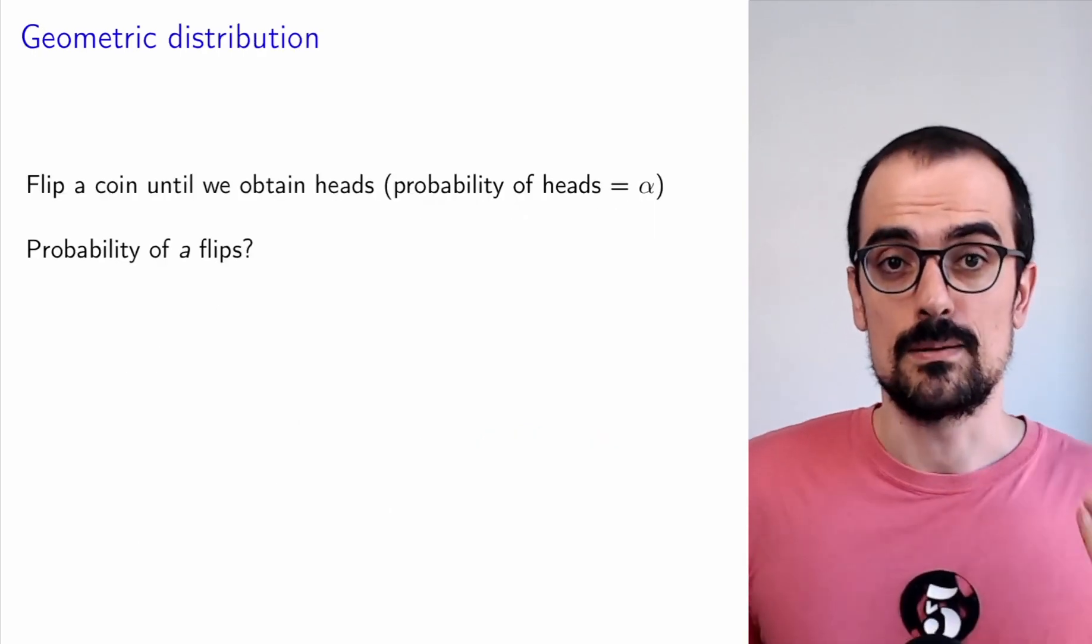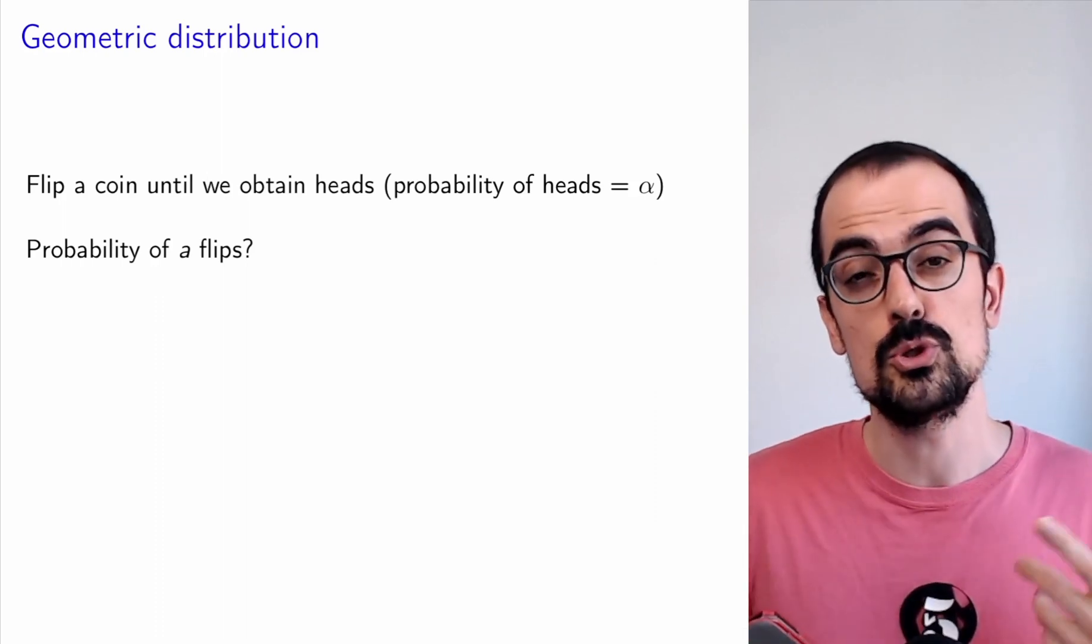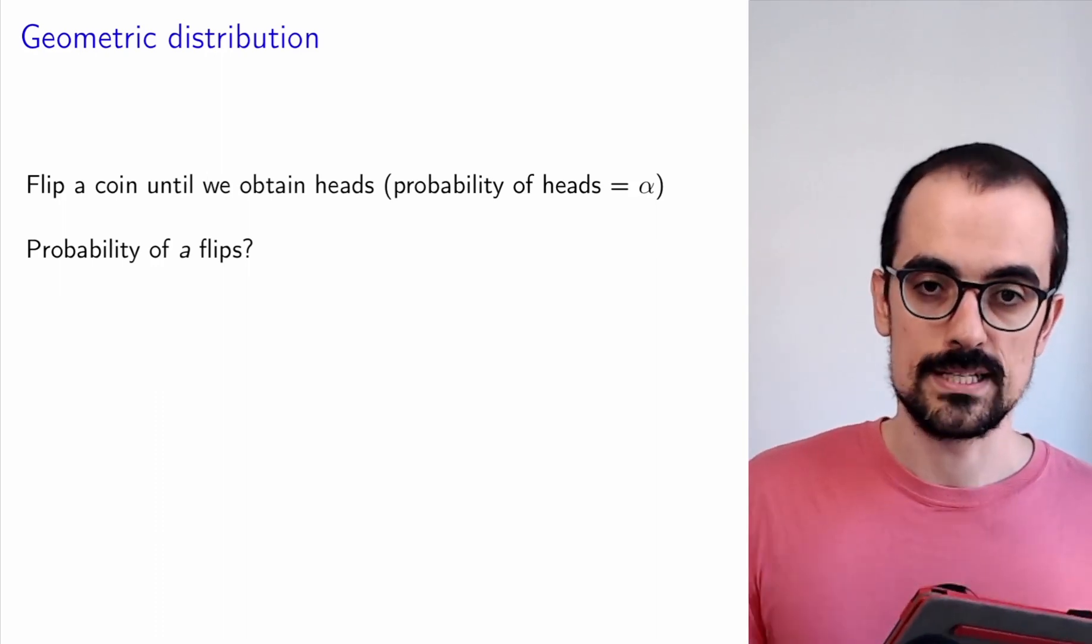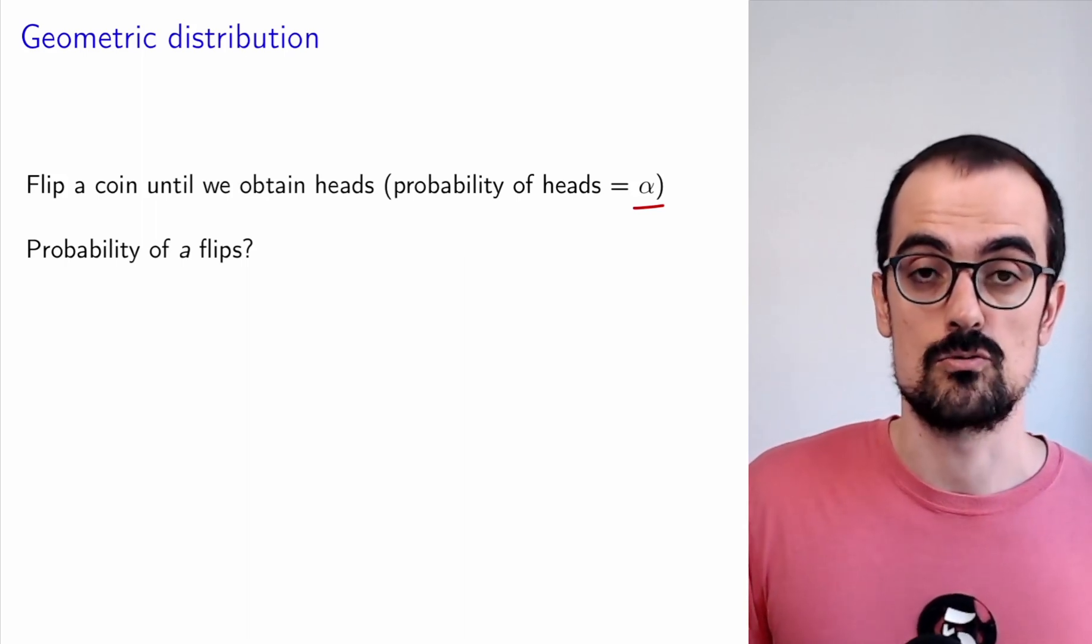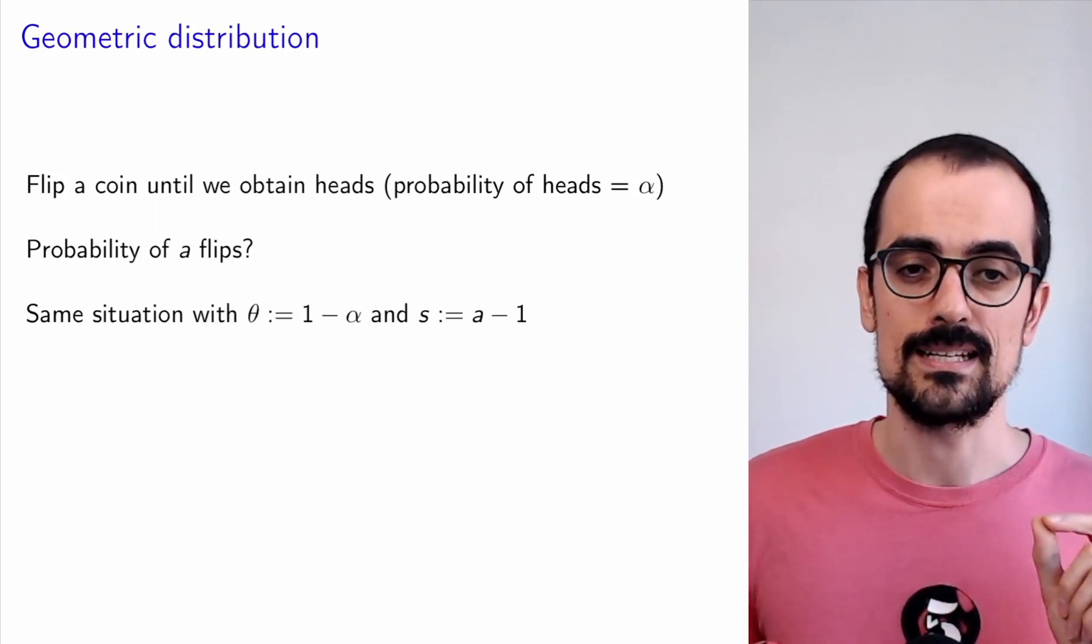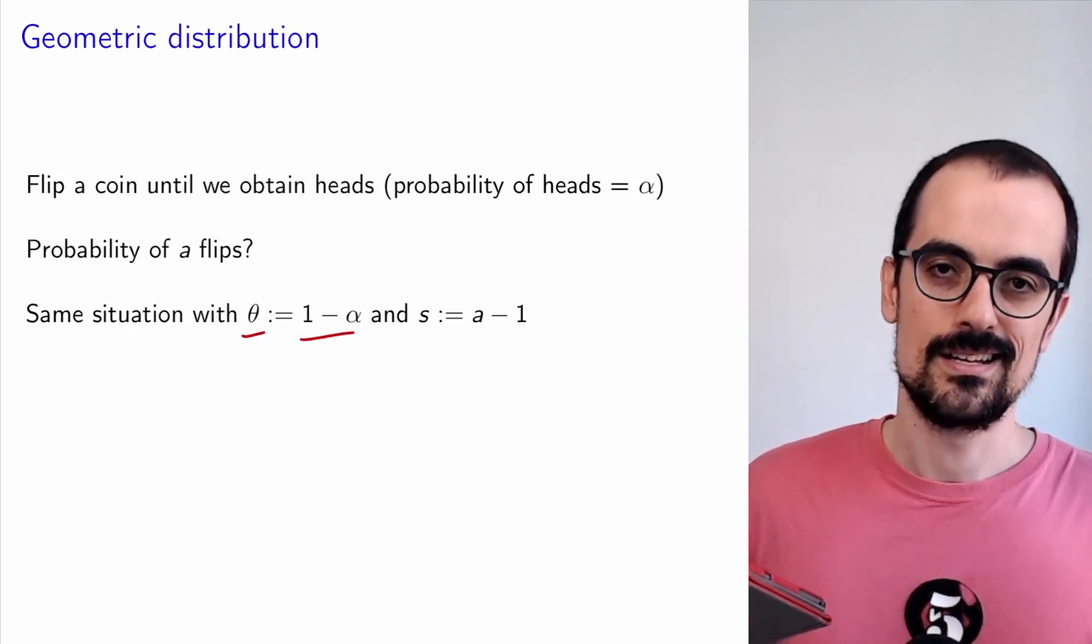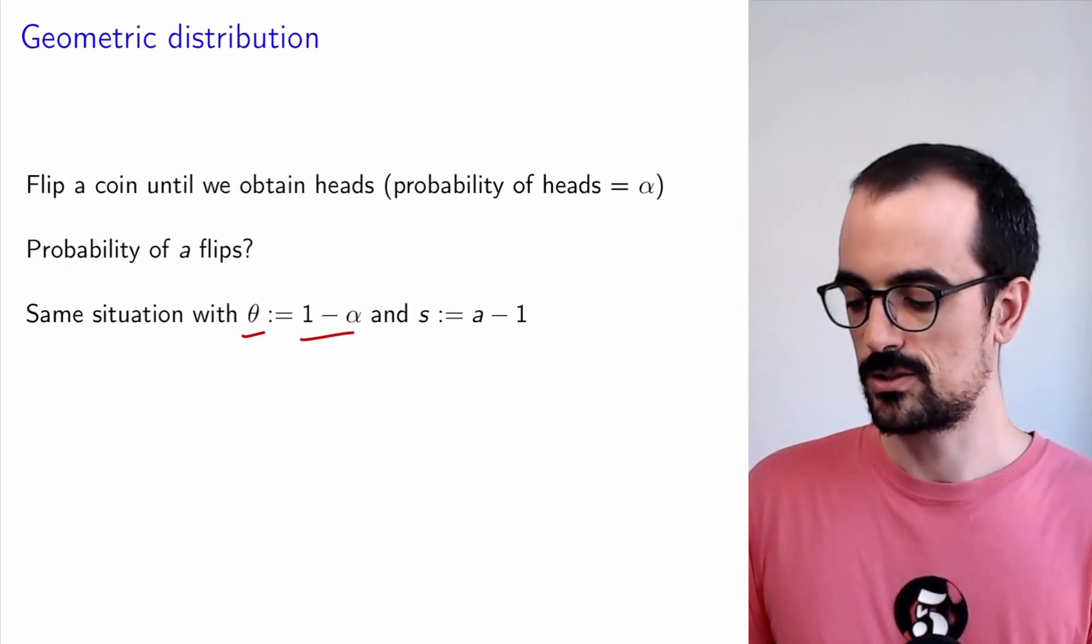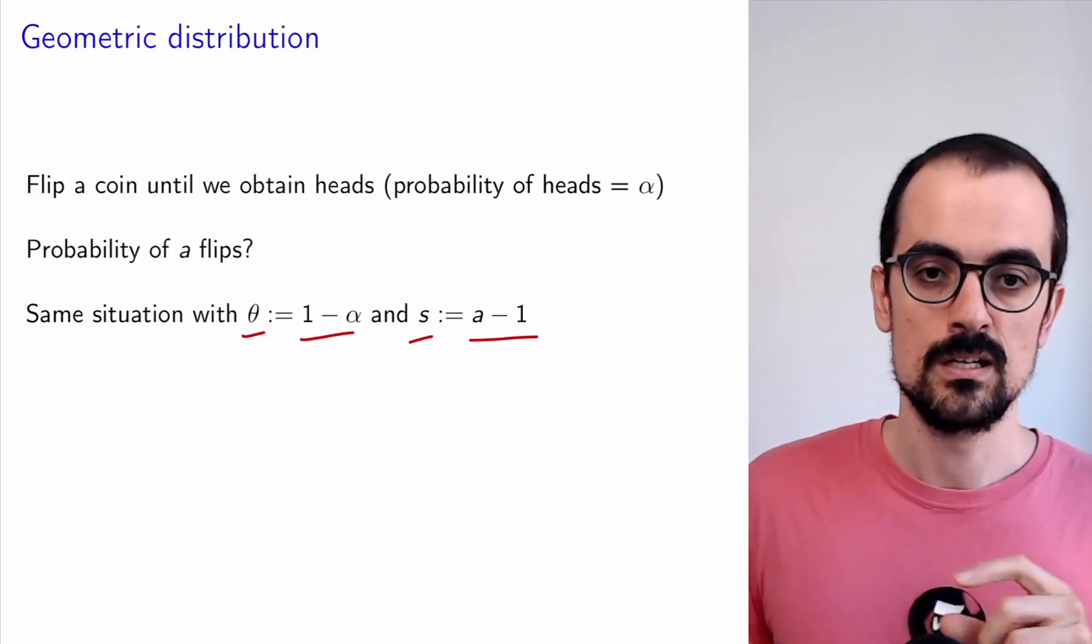It turns out that in the process of designing a parametric model for our free throw data, we have essentially derived the geometric distribution, which is a very popular parametric distribution. Usually the way it's described is slightly different. We flip a coin until we get heads. All the coins are independent and the probability of heads is alpha. Under those circumstances, the number of flips that you need until you get heads is a geometric random variable with parameter alpha. This is the same situation as with the free throws, except that in the free throws we were making free throws until we missed. So our theta was one minus alpha, and we were counting the streak of made free throws, not counting the last one where we missed. So in this case, s would be a minus one.